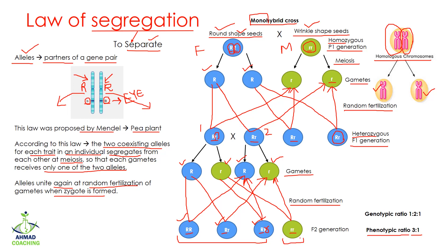Phenotype represents the traits or appearance, so we have a 3:1 phenotypic ratio. The genotypic ratio — referring to the allelic combinations — is 1:2:1: one capital R capital R, two capital R small r, and one small r small r. That was all about the law of segregation. If you have any questions, ask in the comment section. See you in the next video.